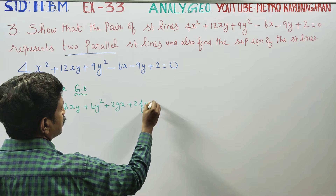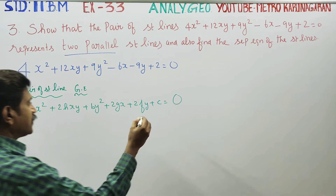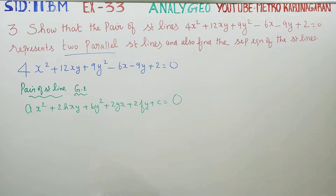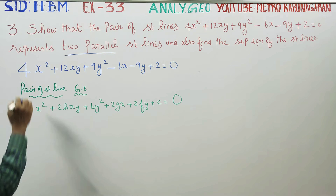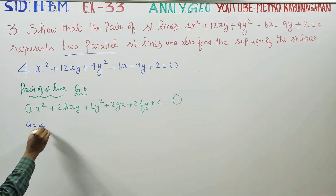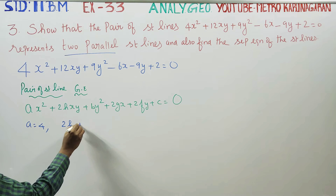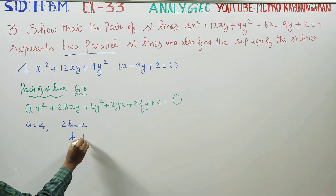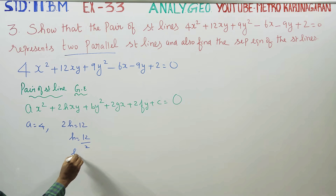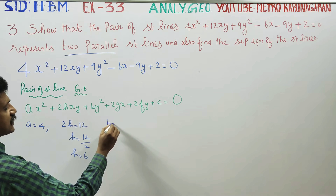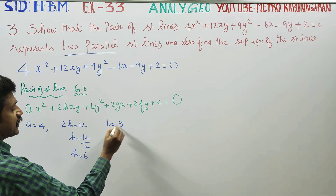This is the pair of straight lines general equation. Now, identifying coefficients: a = 4. From 2h = 12, h = 12/2, so h = 6. b equals the y² coefficient, which is 9.